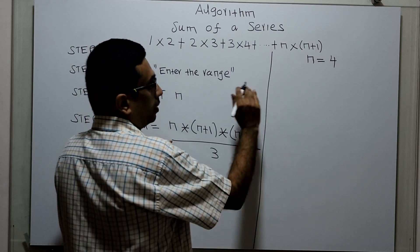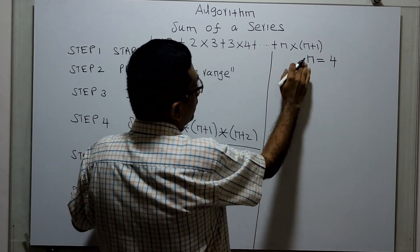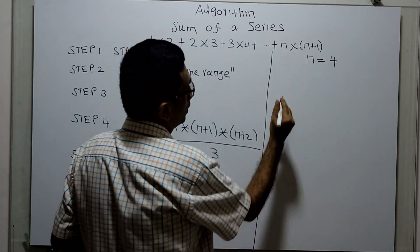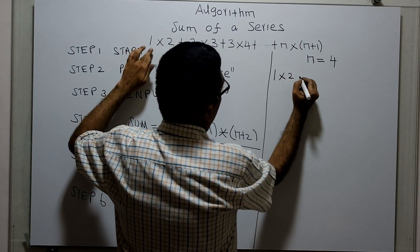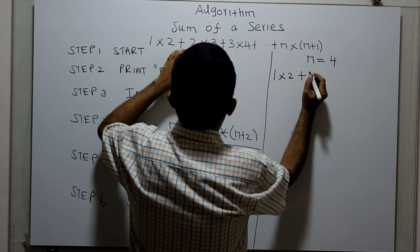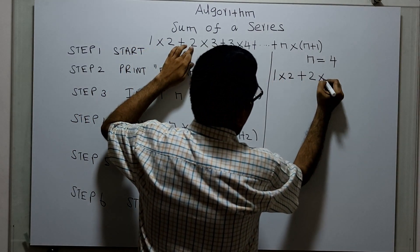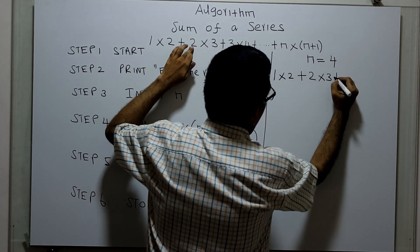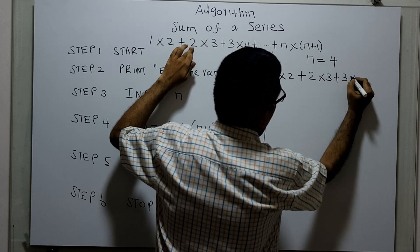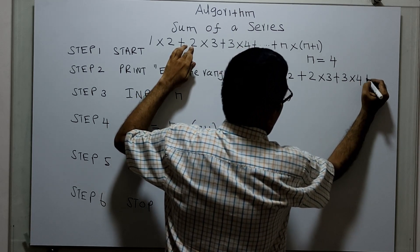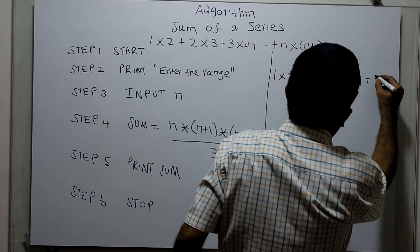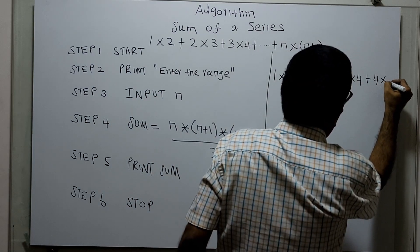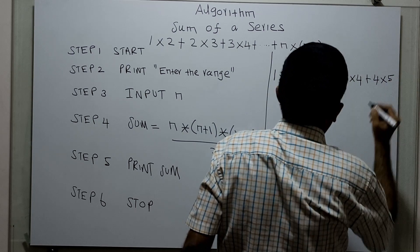You will just apply n equals 4 in the series. It equals 1×2 + 2×3 + 3×4 + n×(n+1), that means 4×5.